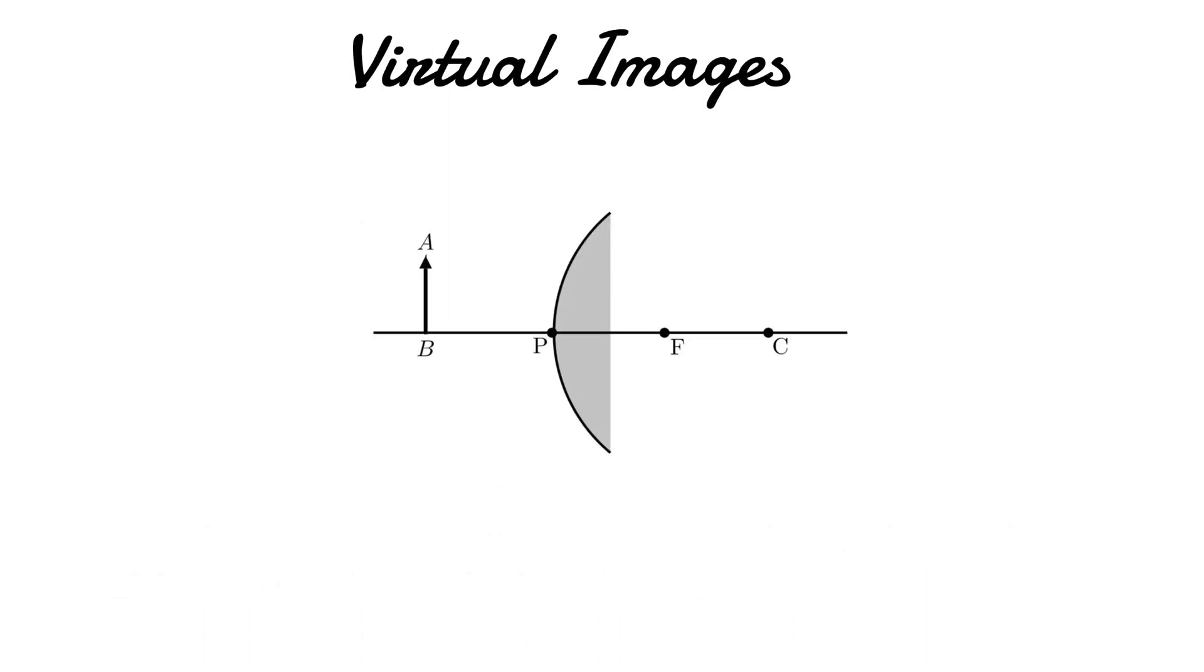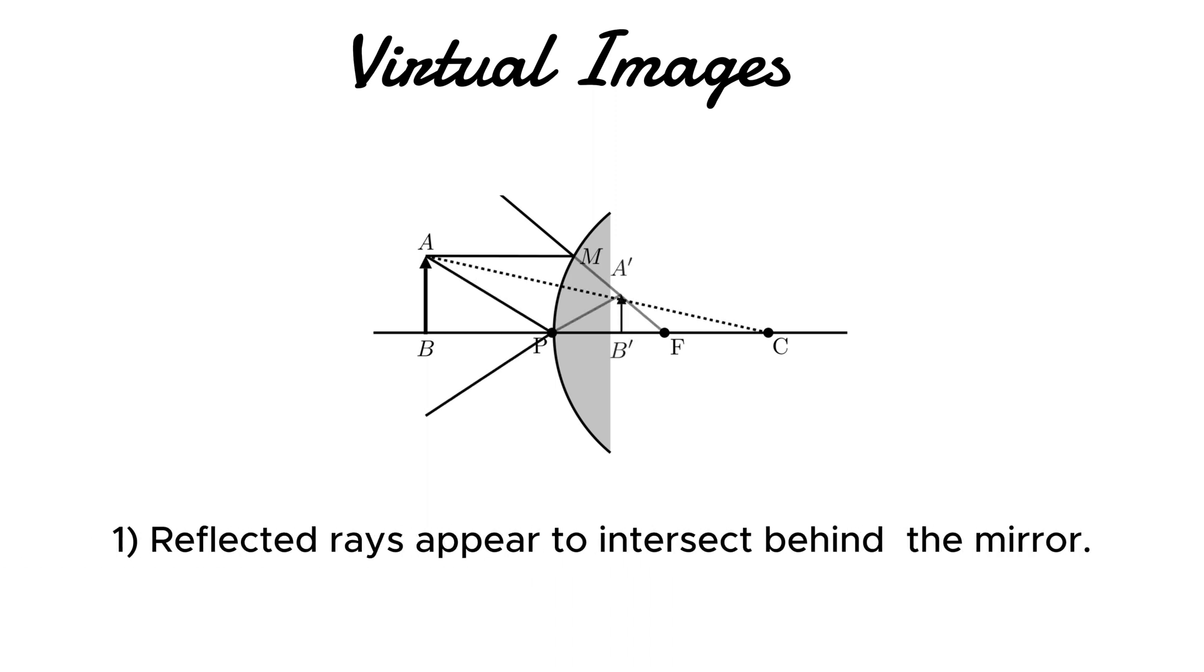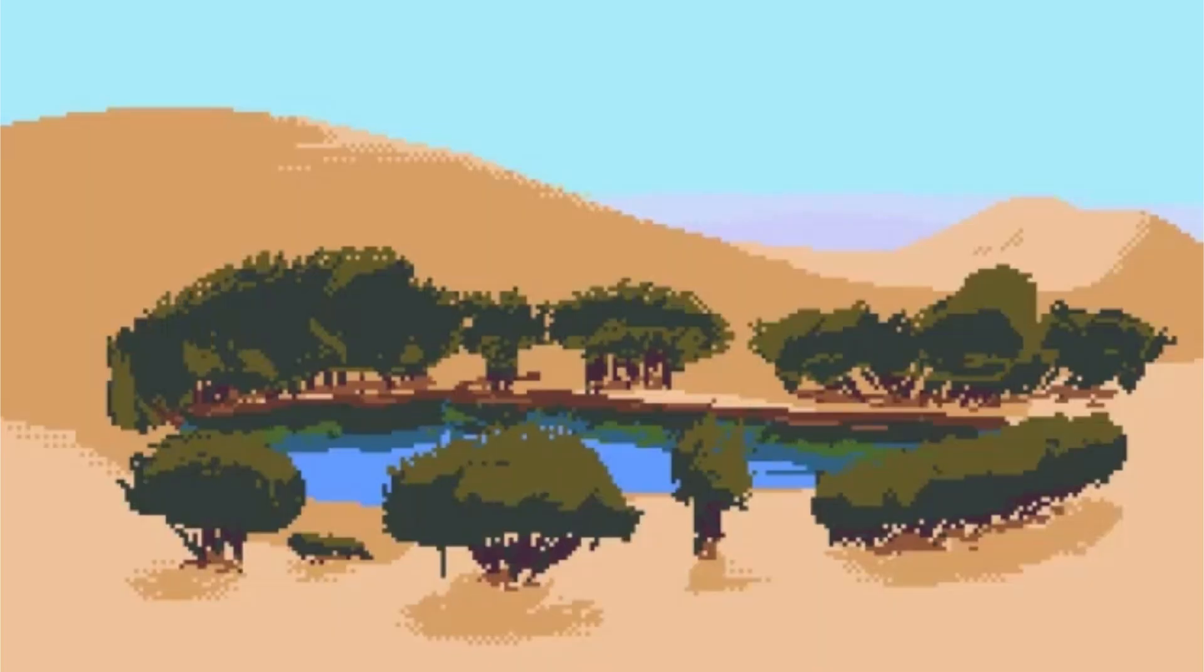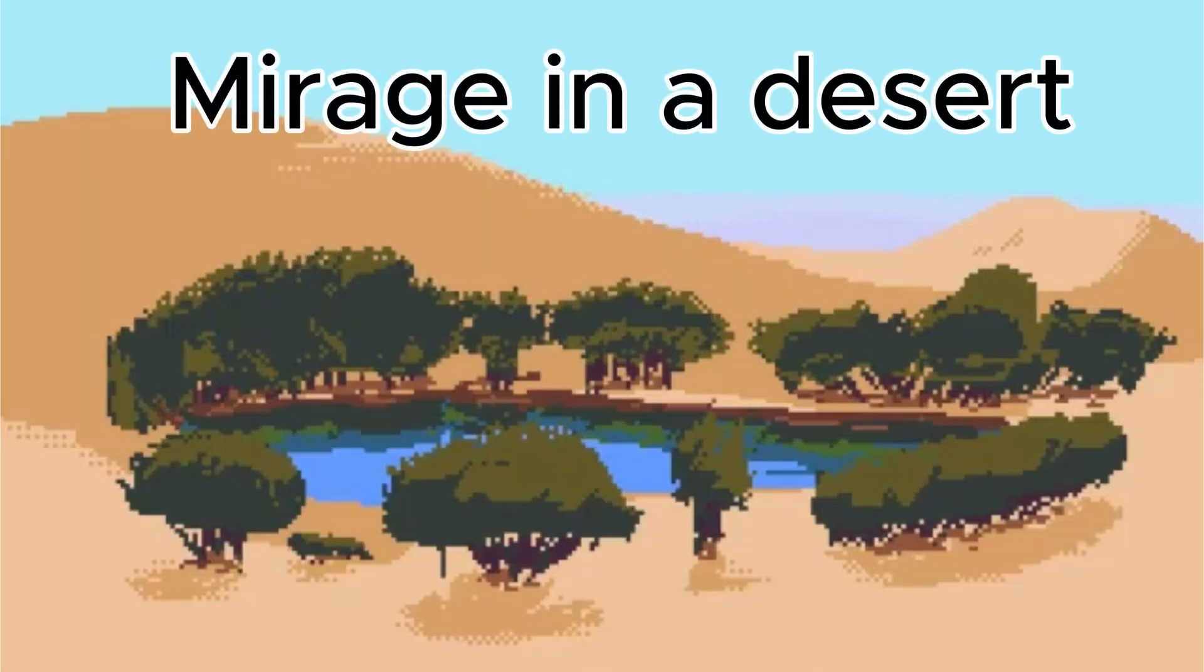On the other hand, virtual images are a bit different. They are formed when light rays appear to intersect behind the mirror, even though they don't actually converge at that point. These images cannot be projected onto a screen because they don't actually exist in physical space. Virtual images are like optical illusions - they appear to be there, but you can't physically touch or capture them.